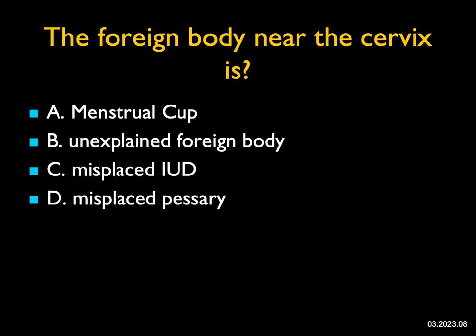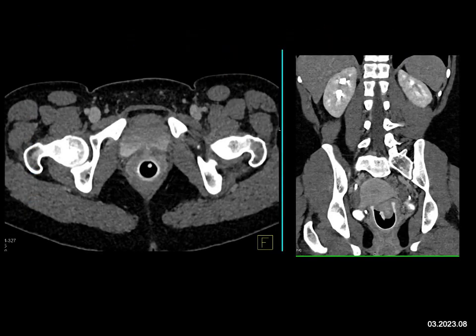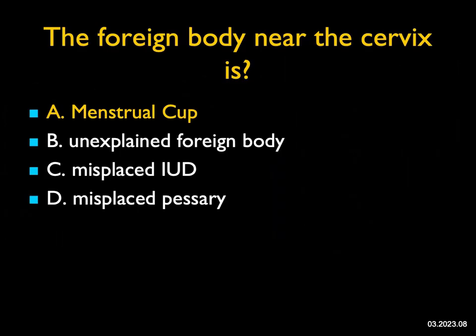This is a great case — I had not seen this, and when I quizzed people, most had not seen it either. The foreign body near the cervix looks almost like a tube, then like a cup. It's not an IUD and not a pessary — pessaries are usually ring-shaped. This is a menstrual cup. Many patients are now using menstrual cups, which are environmentally friendly. You can see it sitting there in a U-shape. So the next time you see it, don't scratch your head — know it's a menstrual cup.